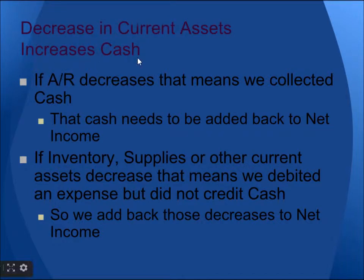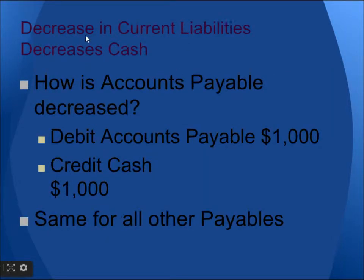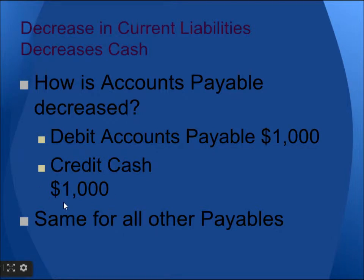Since accounts receivable increased by $2,500, we have to decrease this from net income. If accounts receivable decreases, that means we collected cash — that cash needs to be added back to net income. If inventory, supplies, or other current assets decrease, that means we debited an expense but did not credit cash, so we add those decreases to net income. A decrease in current liability decreases cash: decrease-decrease for liabilities. Accounts payable is decreased by debiting accounts payable $1,000 and crediting cash $1,000. Same for all other payables.